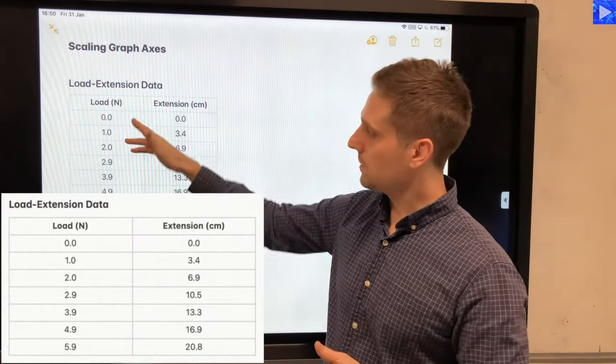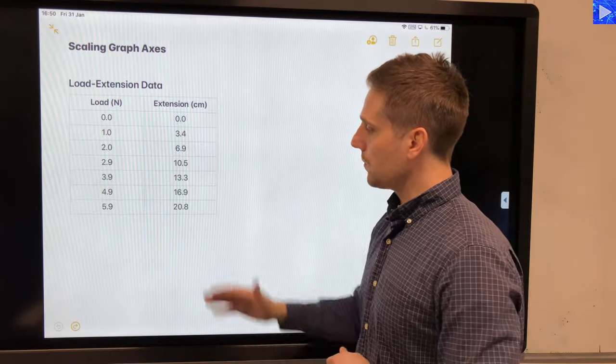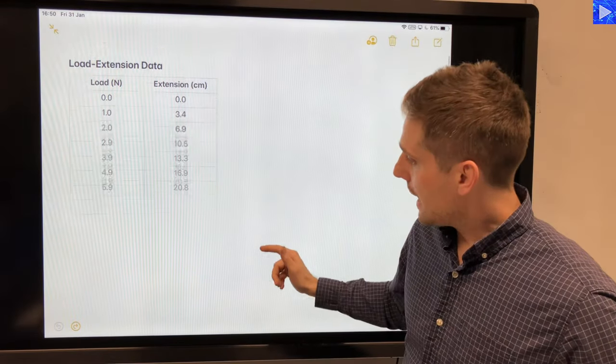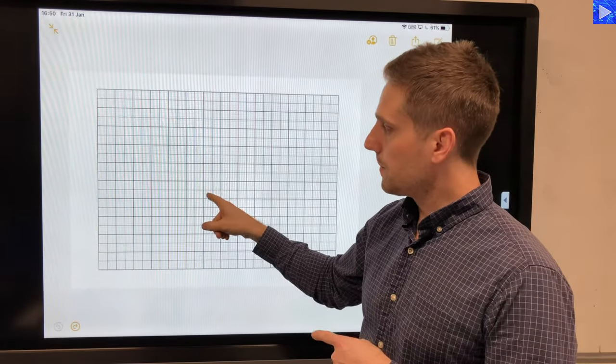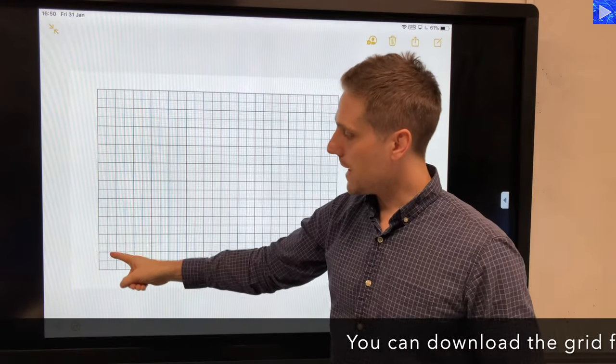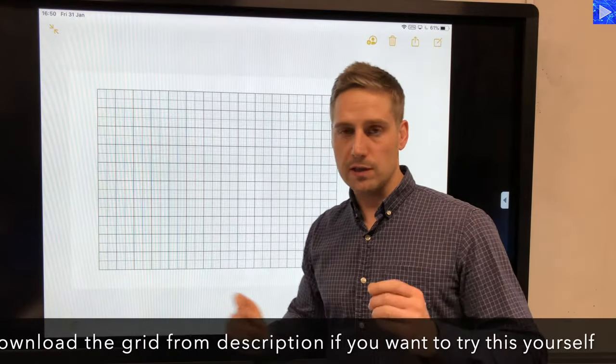And what I want to do is I'm going to put that onto this graph grid. All of the graph grids I'll be using in this example are 10 by 14 large squares vertically and horizontally.